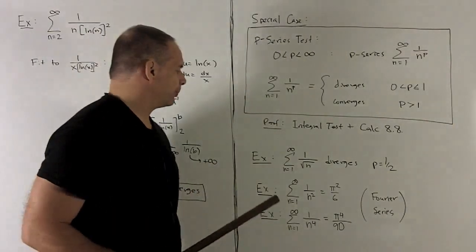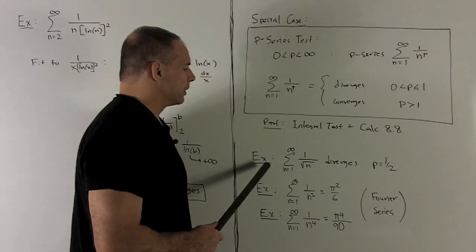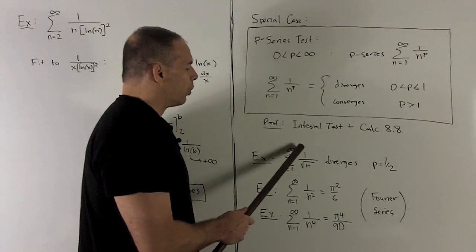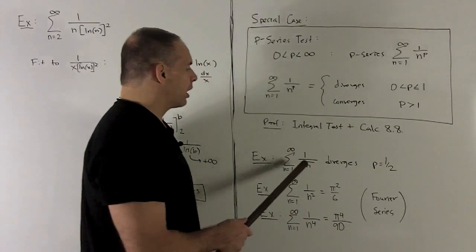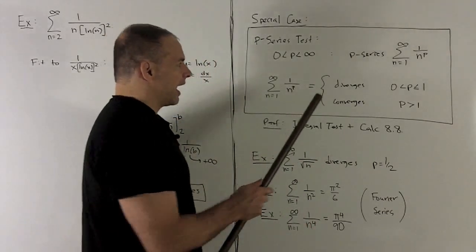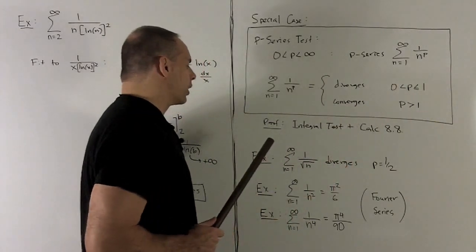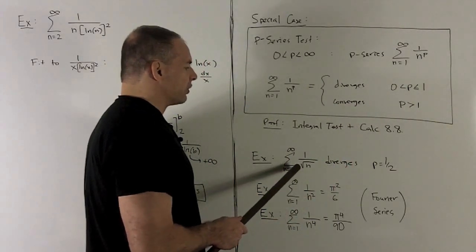Let's look at some examples of this. First example, I look at the series that goes with 1 over square root of n. This n goes from 1 to infinity. Here, p is equal to a half. A half is between 0 and 1, so I automatically get this series diverges.